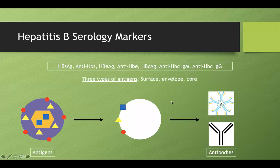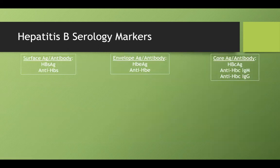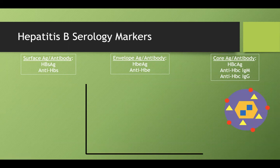There are three types of antigens for hepatitis B. The surface antigen is denoted S — on the surface of the virus. The envelope antigen is denoted E. The core antigen is denoted C — inside the core. Correspondingly, there are antibodies to each. I've categorized all seven serology markers by whether they relate to surface, envelope, or core.